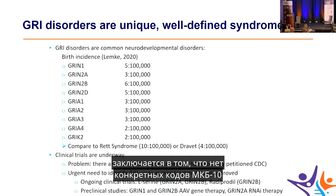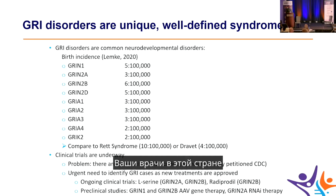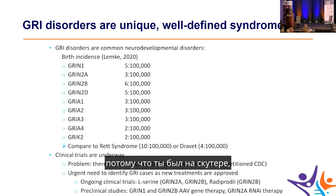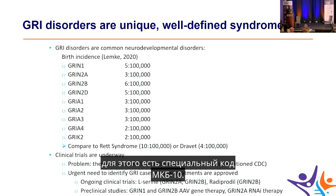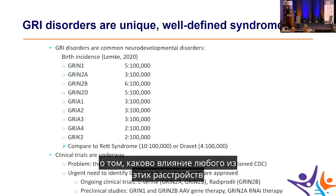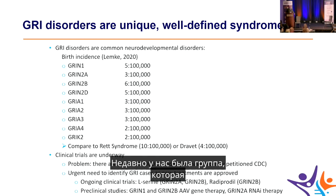A major problem is that there are no specific ICD-10 codes for any of these disorders. In the US, physicians code patients for what they're seen for. There's even a specific ICD-10 code for falling off a rental scooter, but none exists for GRIN disorders. Without these codes, it's impossible to ask basic questions about the impact of these disorders.